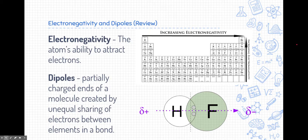In order to talk about the two, we need to first review electronegativity and dipoles. If you recall, electronegativity is an atom's ability to attract electrons. Now we can use the periodic table to get the general idea of how much electronegativity an element has compared to other elements.